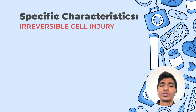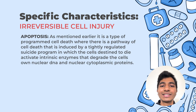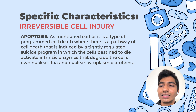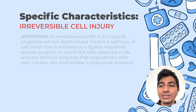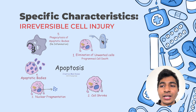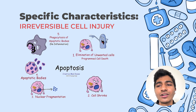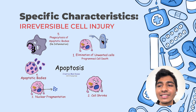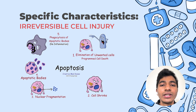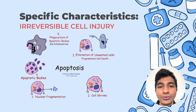Now we will look at apoptosis. We know that it is programmed cell death. There is a pathway of cell death that is induced by a tightly regulated suicide program in which cells that are destined to die — which have no functionality and serve no purpose whatsoever — activate intrinsic enzymes that degrade the cell's own nuclear DNA and its own cytoplasmic proteins.